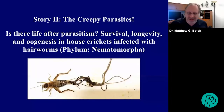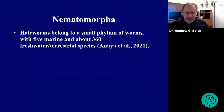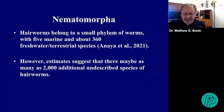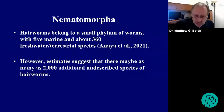Moving on to story two: the creepy parasites. The title is 'Is there life after parasitism? Survival, longevity, and oogenesis in the house cricket infected with hair worms in the phylum Nematomorpha.' Hair worms belong to a small phylum with five marine and about 360 freshwater or terrestrial species. Estimates suggest there may be as many as 2,000 additional undescribed species. They're parasites, they're cryptic, and people don't study these worms very often.